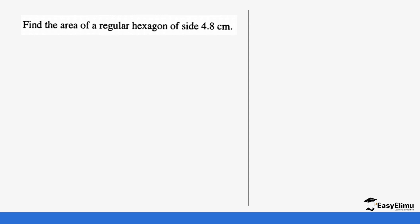Let's look at another question. We are asked to find the area of a regular hexagon with side 4.8 cm. First, let's draw the hexagon — 'hexagon' tells us it has six sides: first, second, third, fourth, fifth, and sixth. If it has six sides, it is going to form six isosceles triangles.